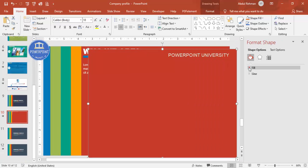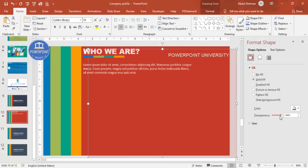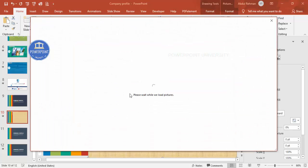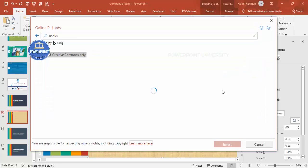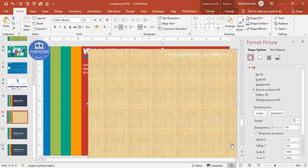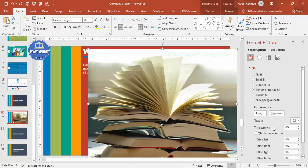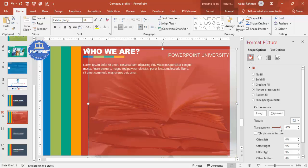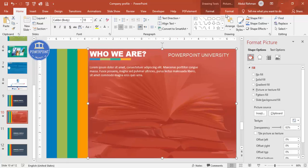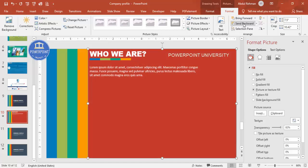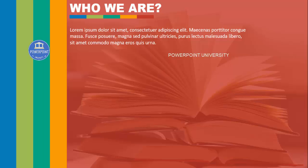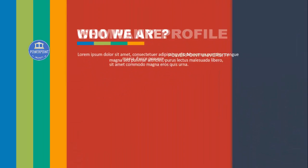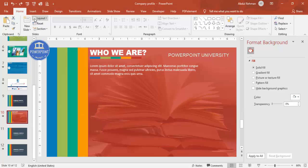Duplicate the shape element and select it. Go to Format Shape > Fill, increase the transparency, then switch to Picture or Texture Fill. Go to Insert > Online Pictures or choose from your PC. Select a suitable image — for example, a books background — click Insert, adjust transparency, and position it. Send it to back so other elements remain visible. Preview the morph animation to see how the slide transitions.